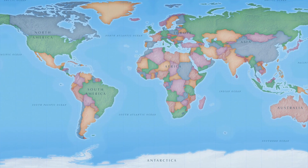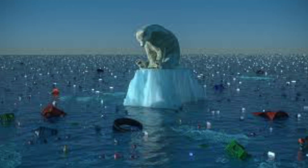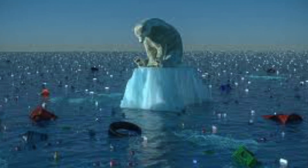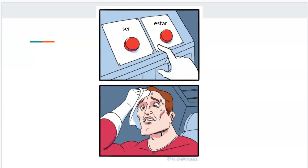The modern world in 2019 faces many problems like climate change, but there are more important problems to focus on — like ser versus estar, and when to use both. William Shakespeare once said 'to be or not to be, that is the question,' and ser and estar both mean 'to be,' which is kind of the problem. So let's look into it.